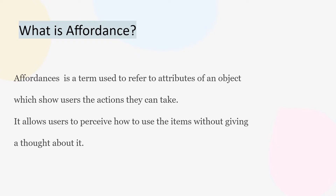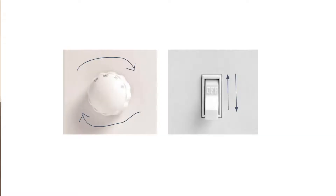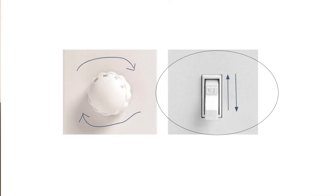Affordance is a term which refers to the attribute of an object that shows users the actions they can take. It helps the user perceive how to use the item without having to think about it. Let's take the example of a fan ceiling switch, which can be designed to look as if it needs to be turned or pushed. The switch on the left side affords to be turned, while the switch on the right side affords to be pushed.